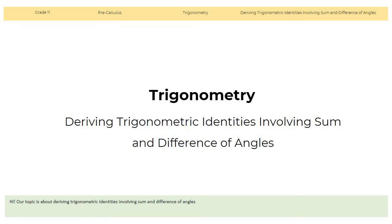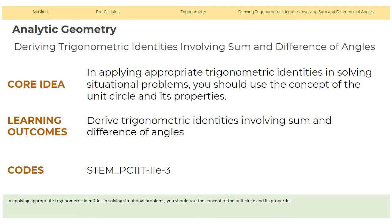Good day students. Today we're going to discuss deriving trigonometric identities involving sum and difference of angles. In applying appropriate trigonometric identities in solving situational problems, you should use the concept of the unit circle and its properties. For the learning outcome: derive trigonometric identities involving sum and difference of angles.